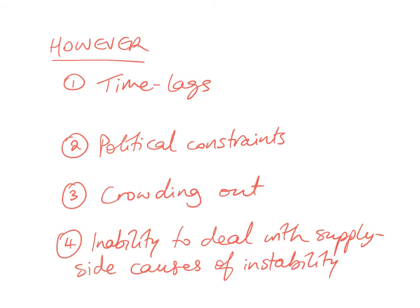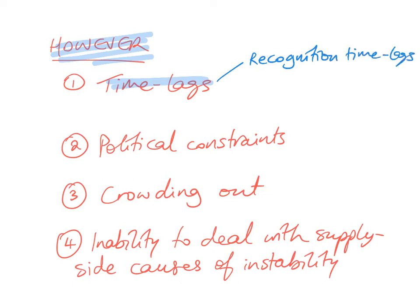However, there are certain limitations or weaknesses of fiscal policy. The first one is time lags, and there are three types. First is the recognition lag — it takes time to recognize that something is not right and that we need to use fiscal policy to fix it.